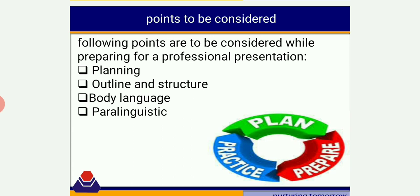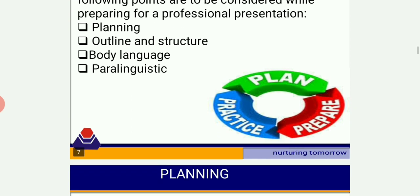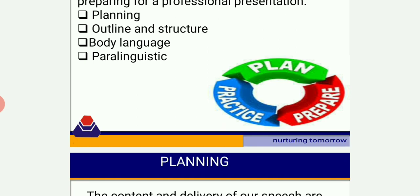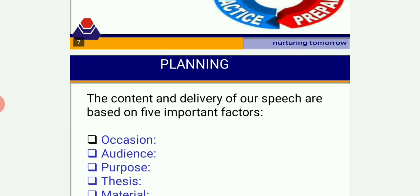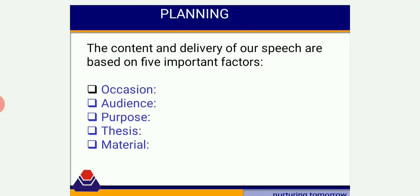We have to consider the following points while preparing for a professional presentation: planning, outline and structure, body language, and paralinguistics. The paralinguistic part will be covered in the next video. Here I will be talking about planning, outline, and body language. Planning the content and delivery of our speech is based on five important factors: occasion, audience, purpose, thesis, and material.